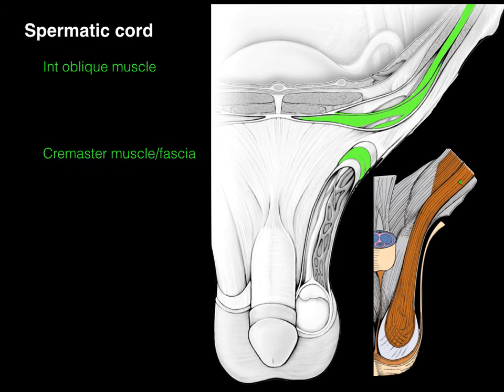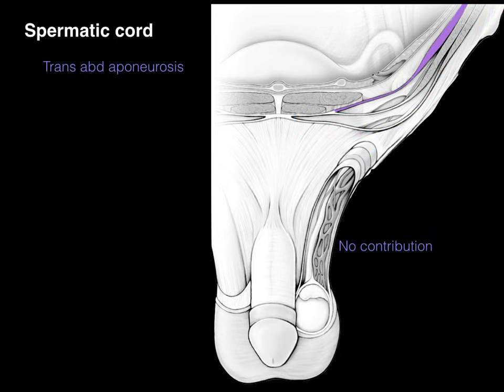This picture shows the internal oblique and the cremasteric muscle — not in step dissection — giving the idea of muscle and fascia surrounding the testis. The transversus abdominis aponeurosis does not give any contribution to the spermatic cord and scrotal sac, as shown — you can see the color above, but it doesn't go down below.